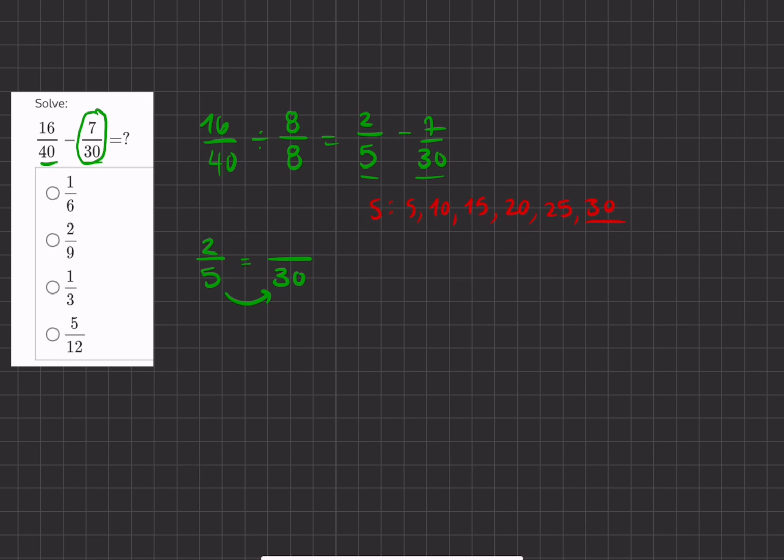To get from 5 to 30, we multiply by 6, meaning we multiply 2 by 6 as well. So now we have 12 over 30 minus 7 over 30, and it's just simple subtraction.